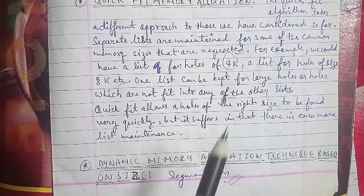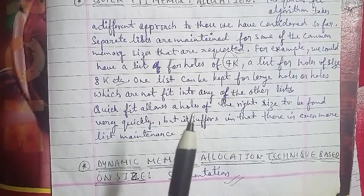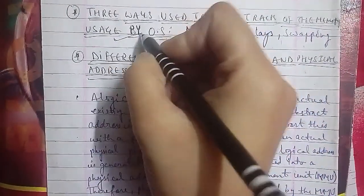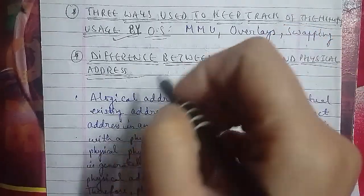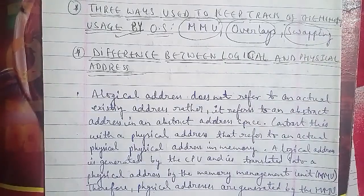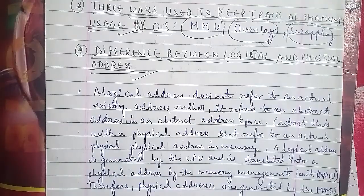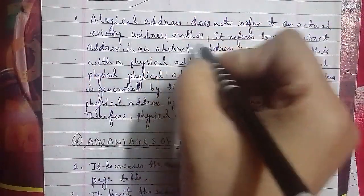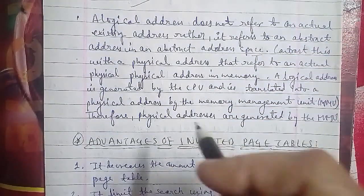Difference between logical and physical address: a logical address does not refer to the actual existing address; rather, it refers to an abstract address in an abstract address space. In contrast, a physical address refers to an actual physical address in memory. A logical address is generated by the CPU and is translated into the physical address by the Memory Management Unit, which we call MMU. The physical address is generated by the MMU.